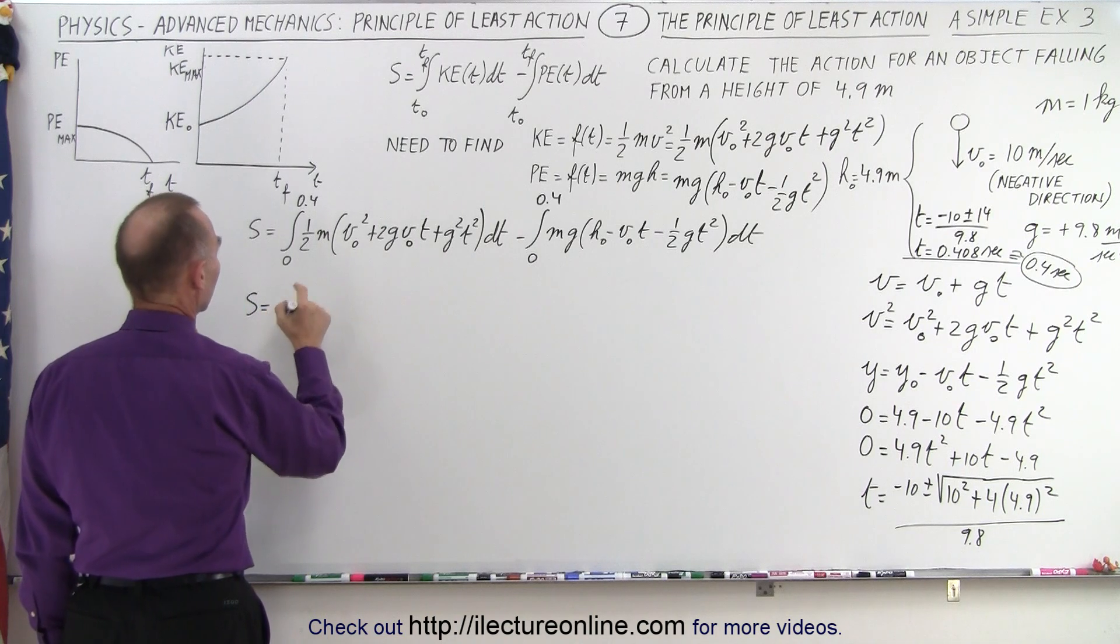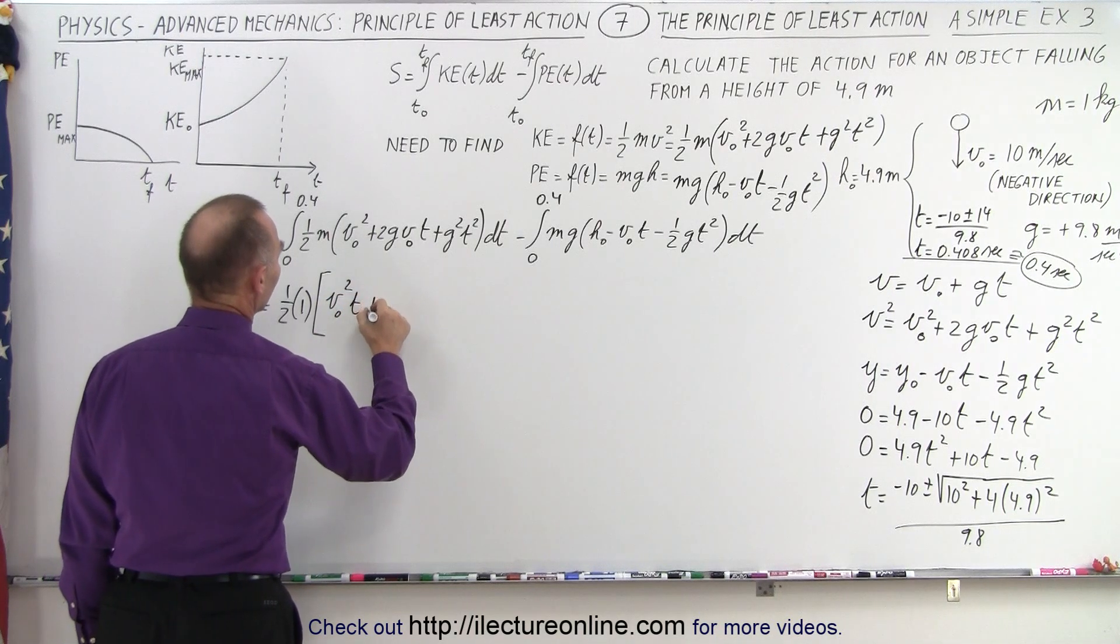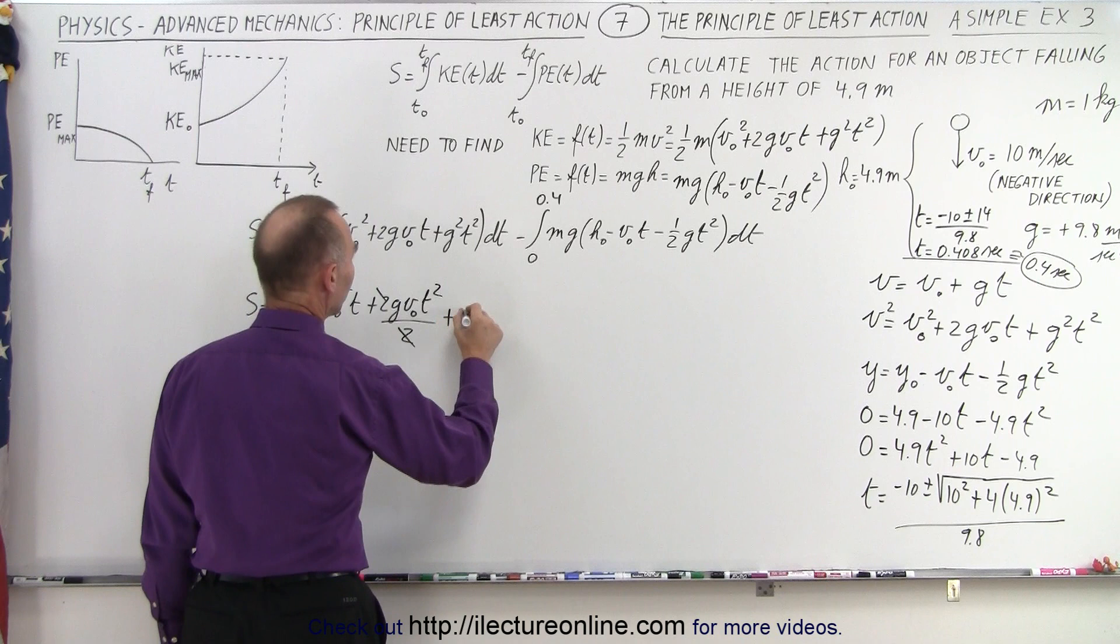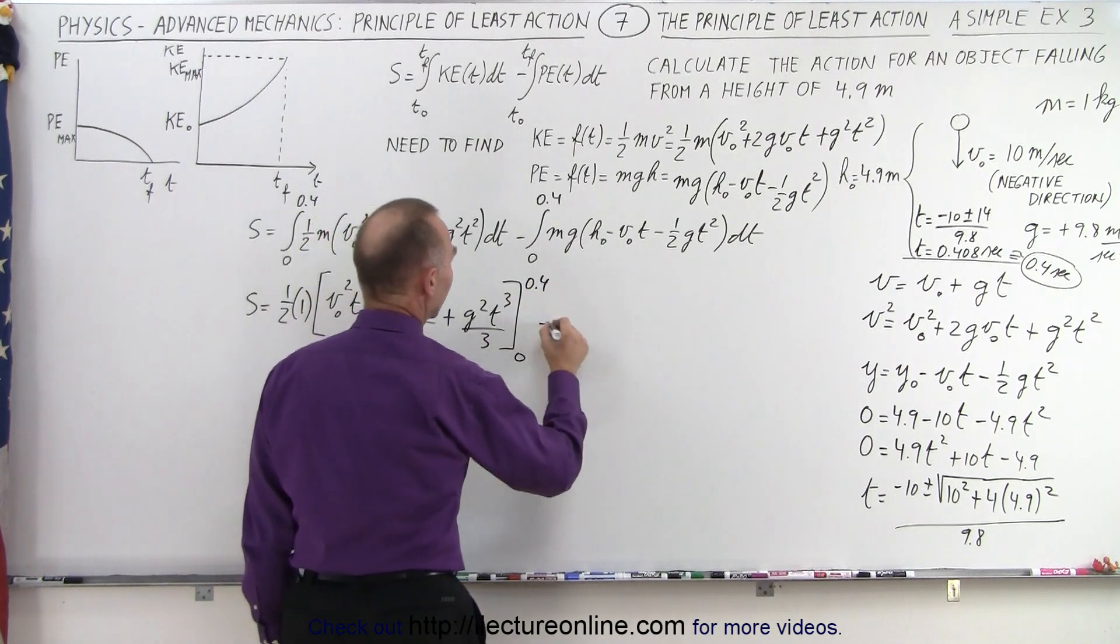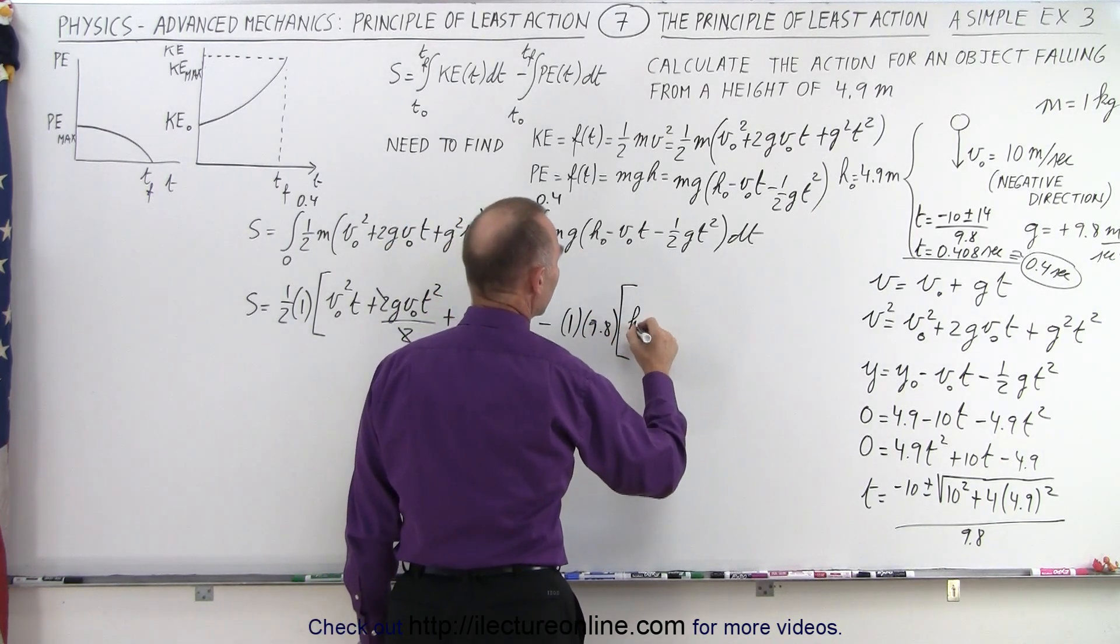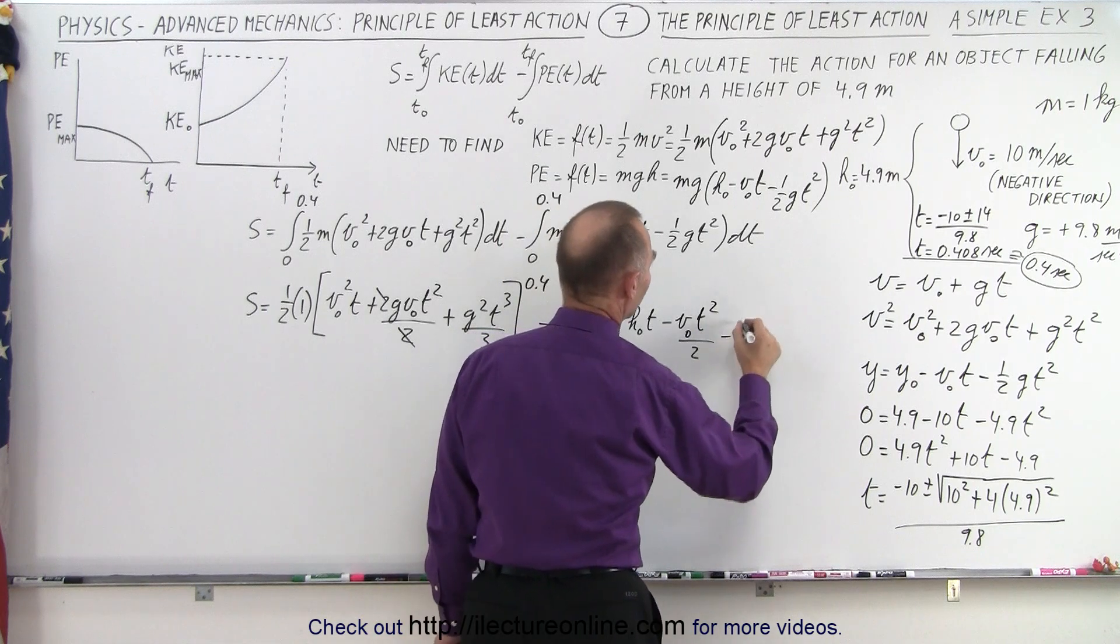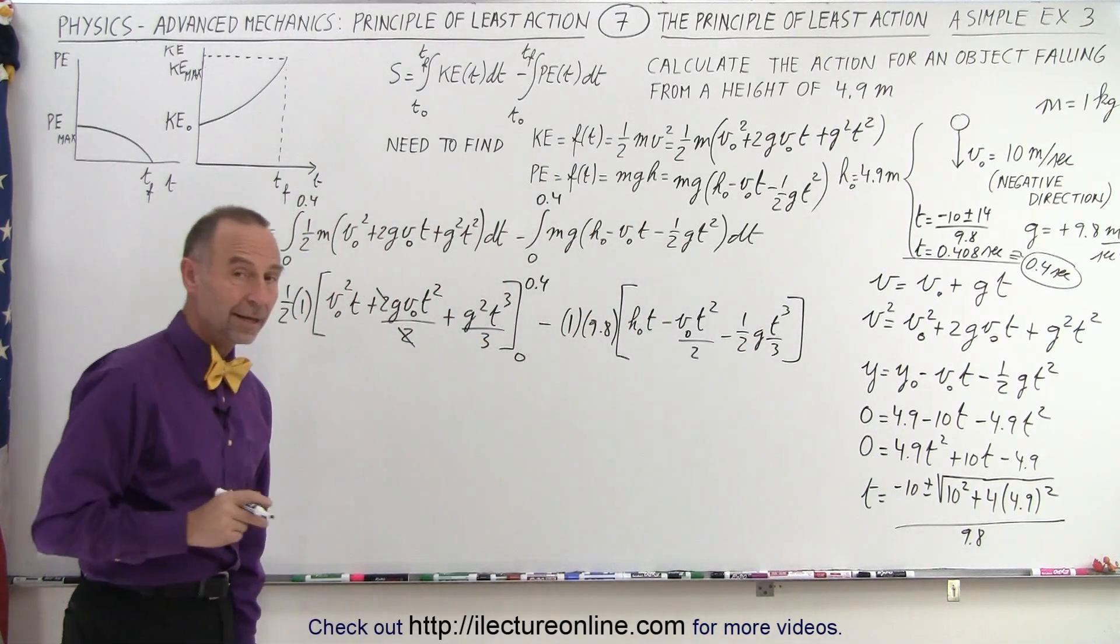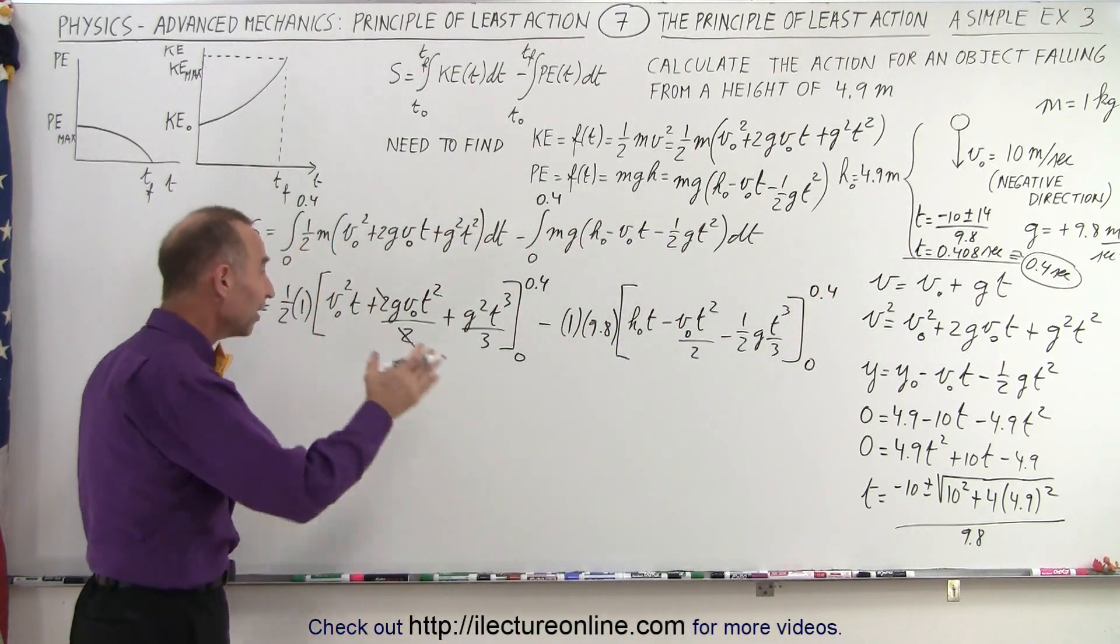So let's continue. S equals, we have one half times the mass, which is one kilogram times v initial squared times t plus g v initial t squared plus g squared t cubed over 3 evaluated from 0 to 0.4, minus mg, that would be 1 times 9.8 times h initial times t minus v initial times t squared over 2, and minus one half g t cubed over 3, like this. Okay, now we just have to evaluate it.